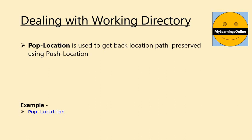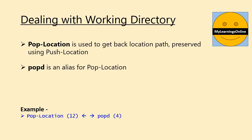Now it's time to get back to our preserved location. Pop-Location command is used to get back the location path that we preserved using the Push-Location command. In this example, we are trying to retrieve our preserved location. Pop-d is an alias for this command. In the example, we can easily see the benefit of using aliases.